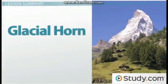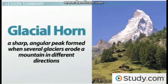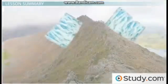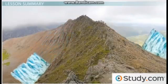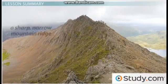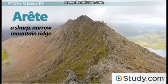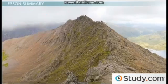A glacial horn is conveniently named because it looks like a horn jutting up from the earth. It is actually a sharp angular peak formed when several glaciers erode a mountain in different directions. If two glaciers erode opposite sides of a mountain, we end up with a sharp narrow mountain ridge called an arête.